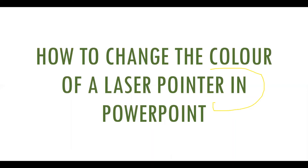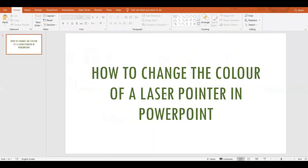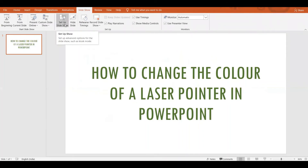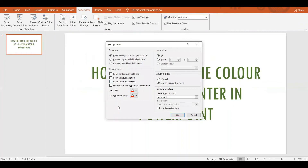However, as pointed out by one of the viewers in the previous video, there is actually another method to change the color of the laser pointer. For that, you need to exit the slideshow mode — I'm going to discard my ink annotations. To change the color of the laser pointer, go to the Slideshow tab and then go to the Set Up Slide Show option.